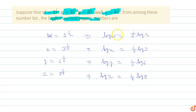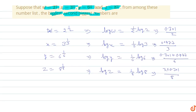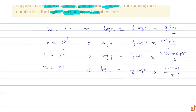Log w is 1/2 times log 2, so that is 0.301 upon 2. Log x is 1/3 log 3, which is 0.477 upon 3. Log y is 1/6 times (log 2 plus log 3), which is (0.301 plus 0.477) upon 6. Log z is 1/8 times log 8, which is 3 times 0.301 upon 8.